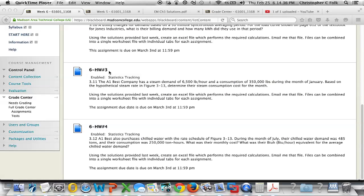Week six homework number three is to solve for problem 3.11, which reads, the A1 Best Company has a steam demand of 6,500 pounds per hour and a consumption of 350,000 pounds during the month of January. Based on this hypothetical steam rate in figure 3-13, which happens to be on page 121, determine the steam consumption cost for the month.